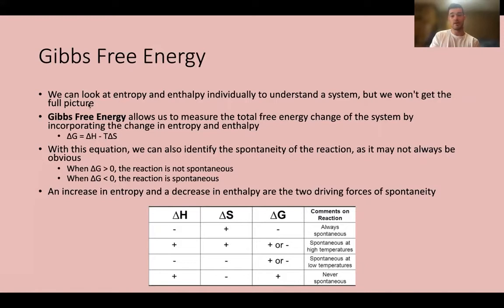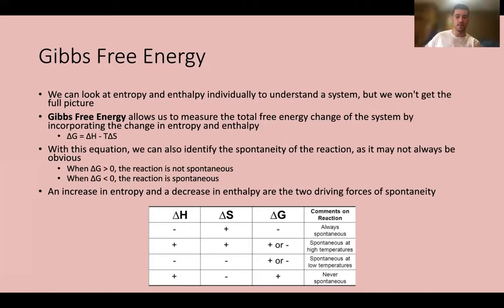The equation you should definitely memorize for the MCAT is delta G equals delta H minus T times delta S, where delta G is Gibbs free energy, delta H is enthalpy, and T times delta S is the ambient temperature times the change in entropy. Most Gibbs free energy questions on the MCAT are conceptual — they'll ask about a specific reaction and whether it is spontaneous, so you plug in positive and negative values.